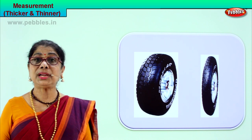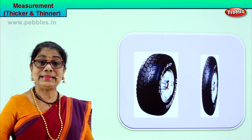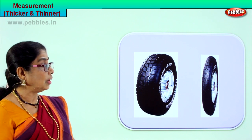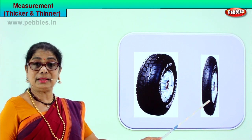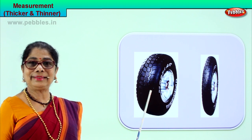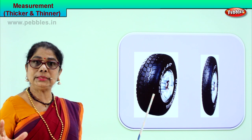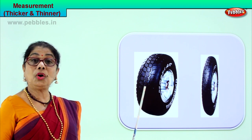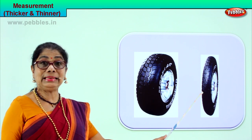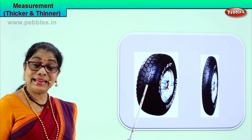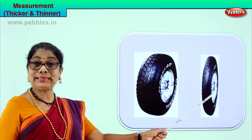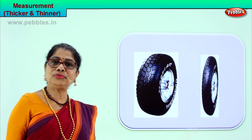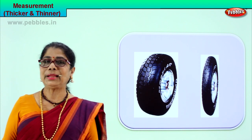Look, we have two tyres here. You have noticed daddy's car has a very thick tyre, and if you look at a cycle it's got a very thin tyre. Thicker tyres are for cars and lorries — they are very thick. Cycle tyres or small motorbikes have a thin tyre. This tyre is thicker than this tyre. Or, this tyre is thinner than this tyre. Thicker, thinner — have you understood?